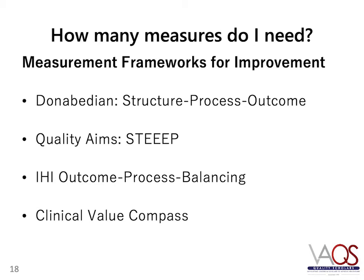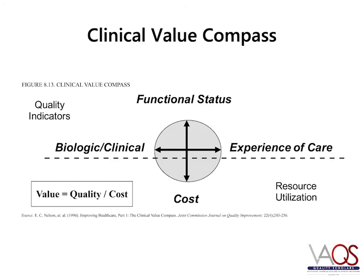For most local QI projects, the use of outcome measures, process measures, and balancing measures is a good structure, as is the clinical value compass. The clinical value compass was developed in the early 1990s when two physicians and their team identified the outcomes that would make them the best unit. This framework balances the quality and cost of care in order to provide high-value healthcare.